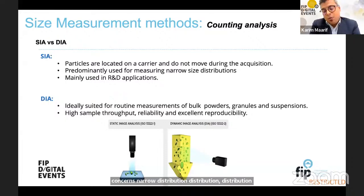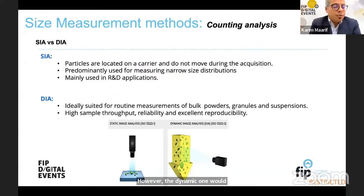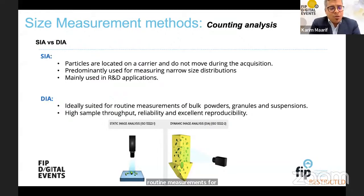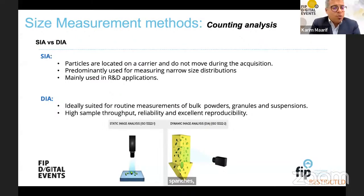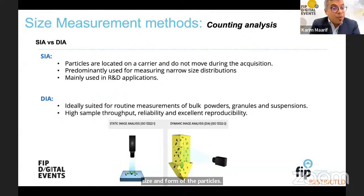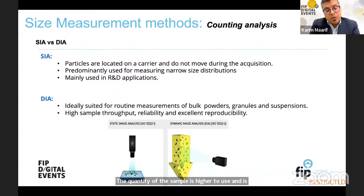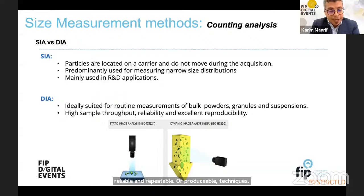Dynamic image analysis is the best and ideal routine measurement for bulk powders, granules, suspensions, and even emulsions if we want to check the size and form of particles. A higher quantity of sample is used and it is a reliable, repeatable, and reproducible technique.